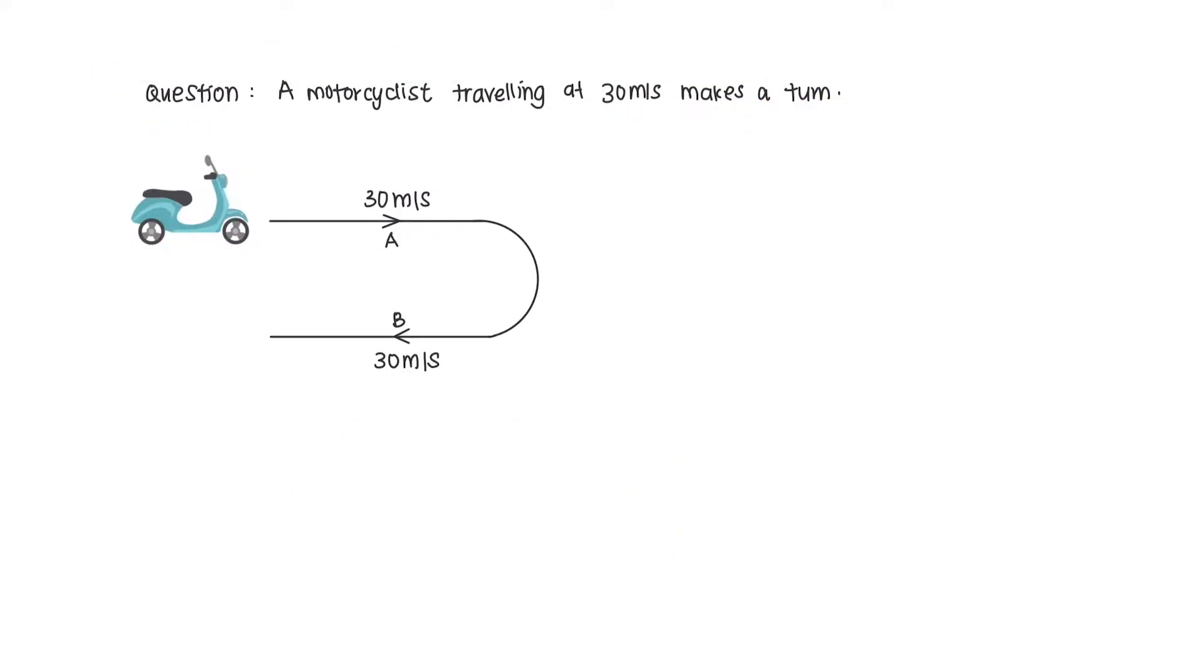Let's look into a worked example here. A motorcyclist traveling at 30 meters per second makes a turn. Compare the speed and velocity between point A and B. You can pause this video and try it by yourself first.